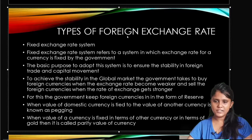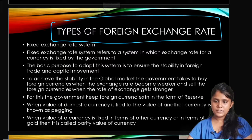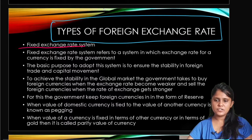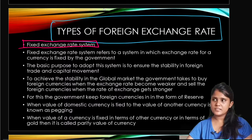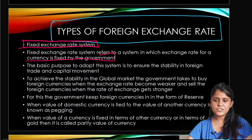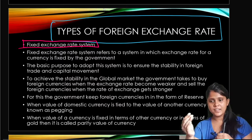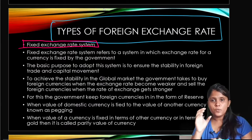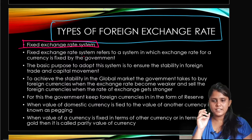Now let's look at the types of foreign exchange rate. The first type is the fixed exchange rate system. In the fixed exchange rate system, the exchange rate for a country's currency is fixed by the government. So in this system, how much of a currency is exchanged with any other currency — that exchange rate is set by the government.